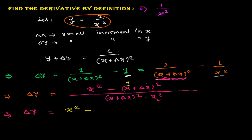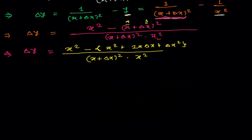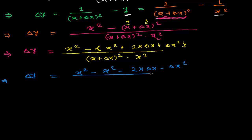I will treat (x plus delta x) whole squared as (a plus b) whole squared. We know that (a plus b) squared equals a squared plus 2ab plus b squared. So expanding: the numerator becomes x squared minus (x squared plus 2x·delta x plus delta x squared), which gives x squared minus 2x·delta x minus delta x squared, all divided by (x plus delta x) squared times x squared.